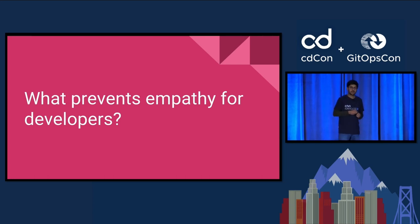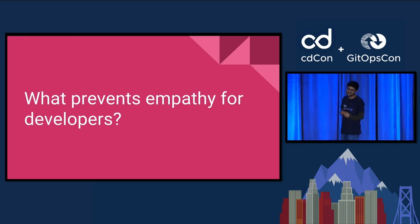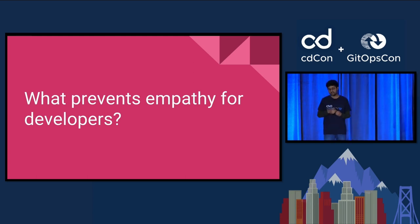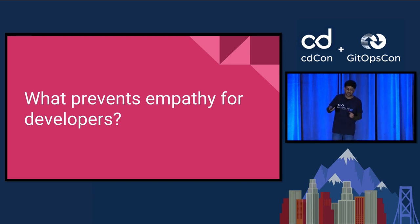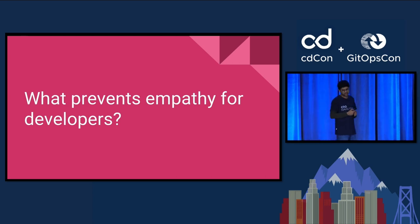There are a lot of biases that prevent developers from empathizing with users. First is confirmation bias — the tendency to seek out information that confirms pre-existing beliefs while ignoring information that contradicts them. A developer with confirmation bias will only seek user feedback that confirms their assumptions about the product rather than seeking out challenging feedback.